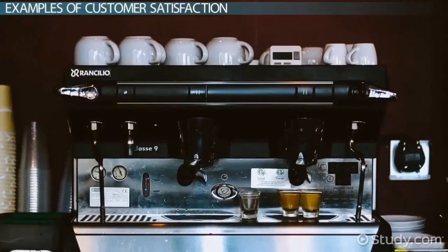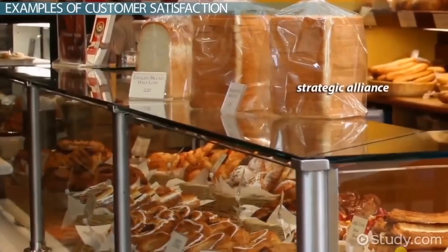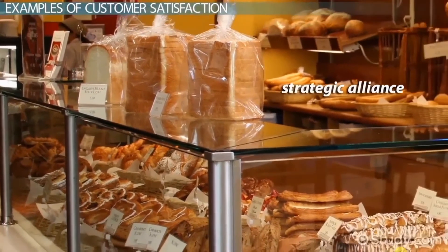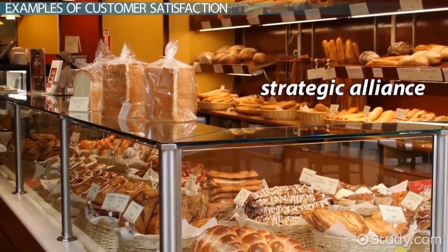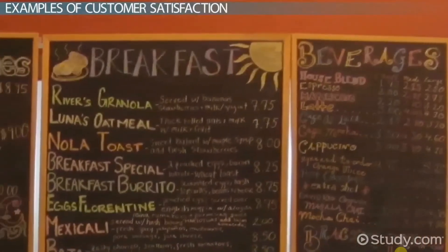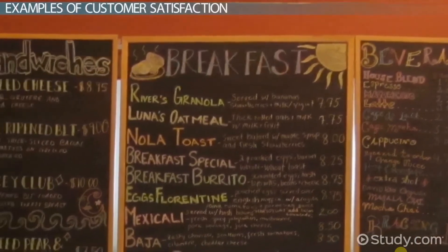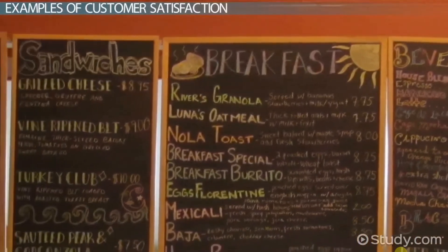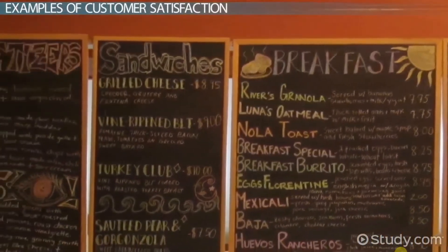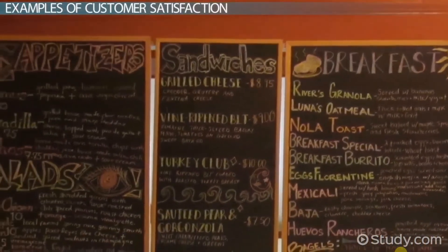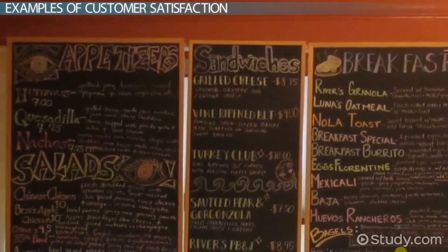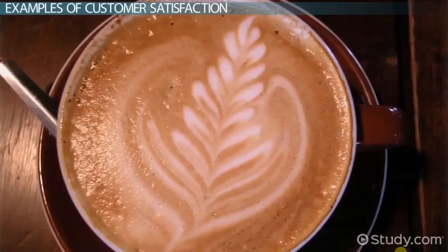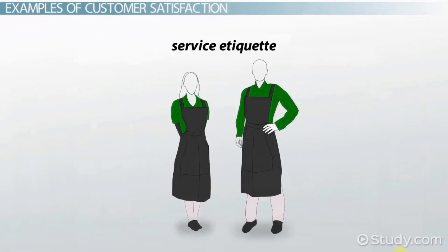You create a strategic alliance with a local delicatessen to supply your shop with breads, pastries, soups, and sandwiches. You price all your products slightly below the finest of your competition but well above the cheaper competition, to send a message of a premium product for an economical price. You train your staff in business and service etiquette and supply them with well-tailored uniforms.